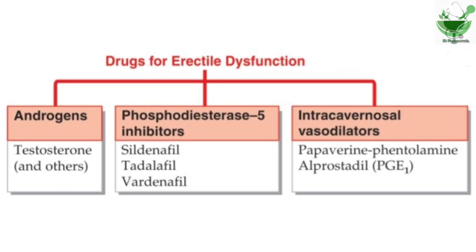Now let's discuss the drugs used for the treatment of erectile dysfunction. First, androgens like testosterone and others previously discussed. Then the phosphodiesterase-5 inhibitors, which block this enzyme and increase cyclic GMP levels in smooth muscle cells — the drugs are sildenafil, tadalafil, and vardenafil. Then vasodilators acting on the intracavernosal area: papaverine, phentolamine, and alprostadil (prostaglandin E1).